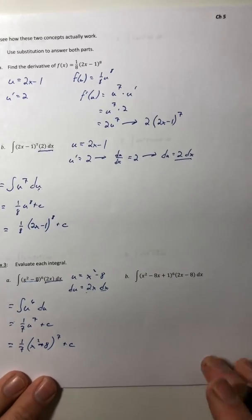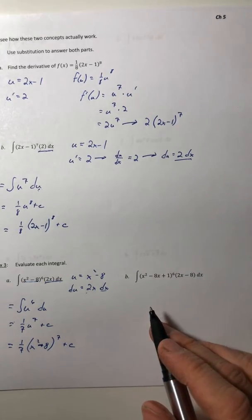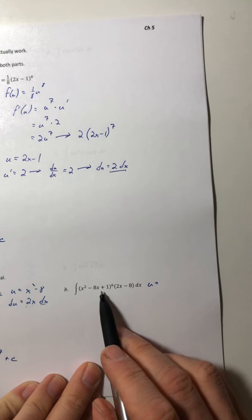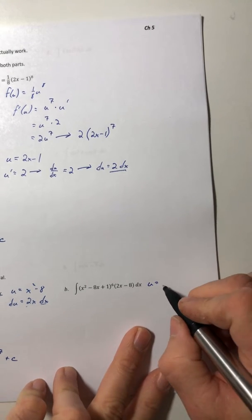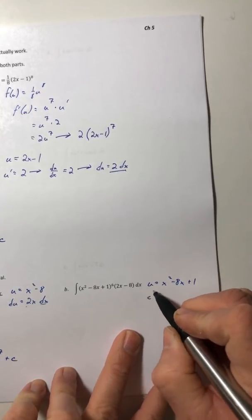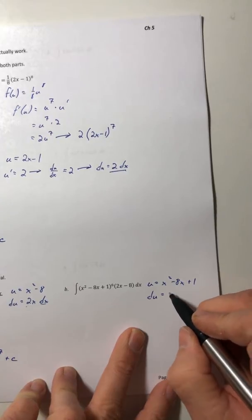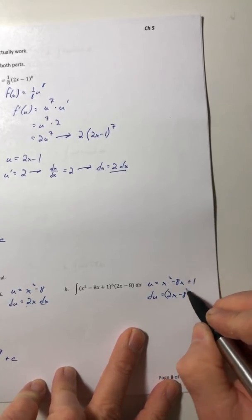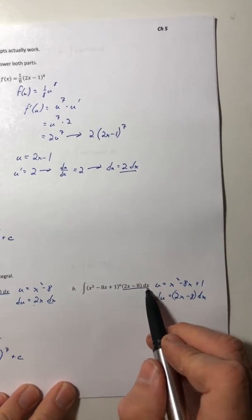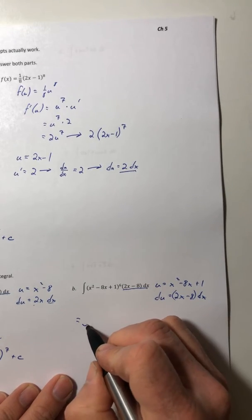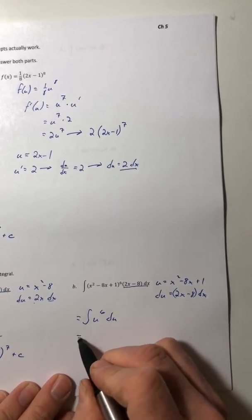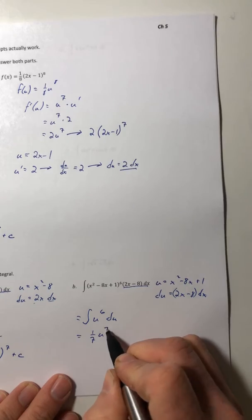Okay, so there's the first one. Let's try the second one. Same thing, I want u to equal the big stuff that's in there, so x squared minus 8x plus 1. And then our du would be 2x minus 8 with the dx being multiplied to all of it, and that's really nice because that matches up to the rest of the integral.